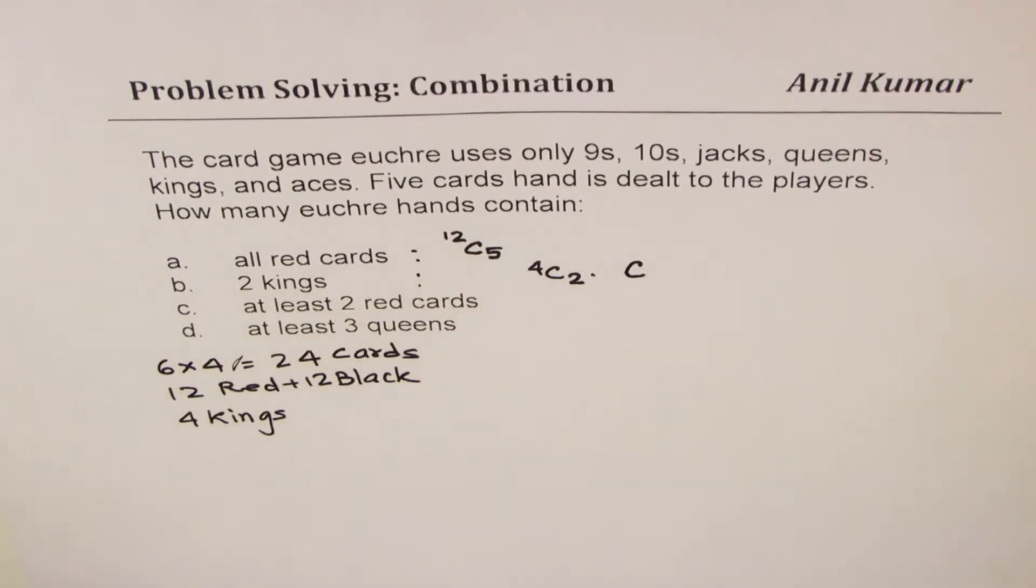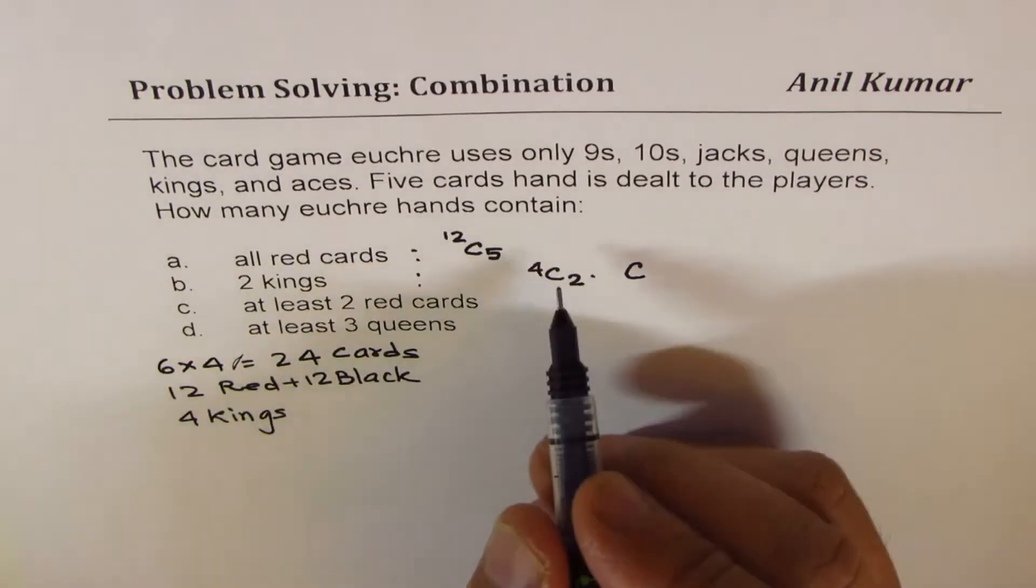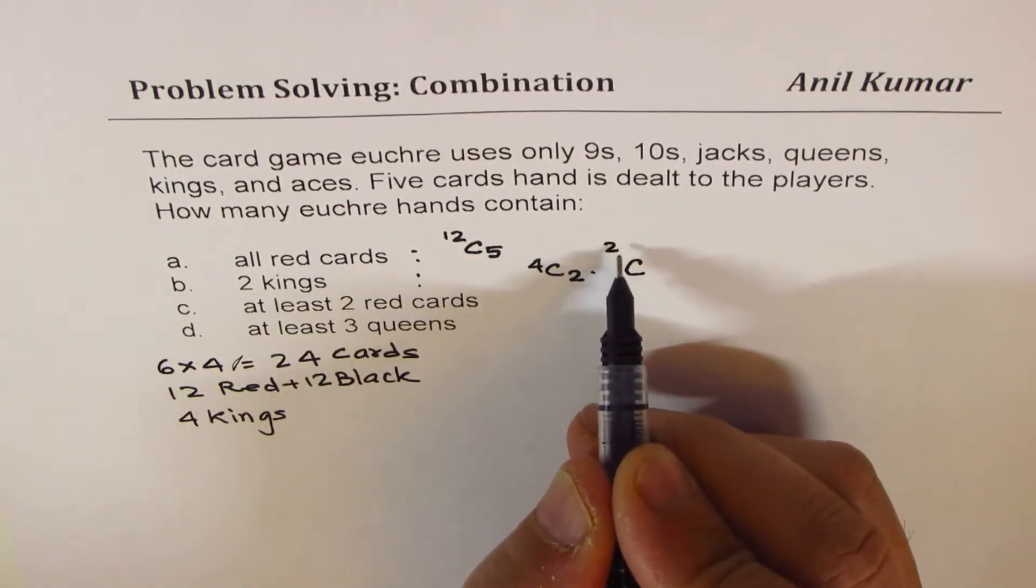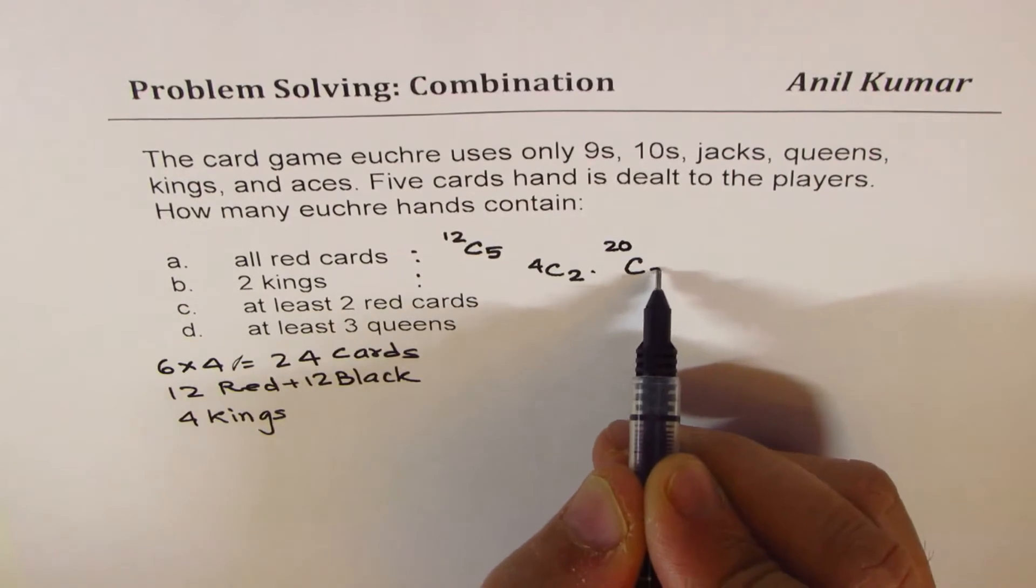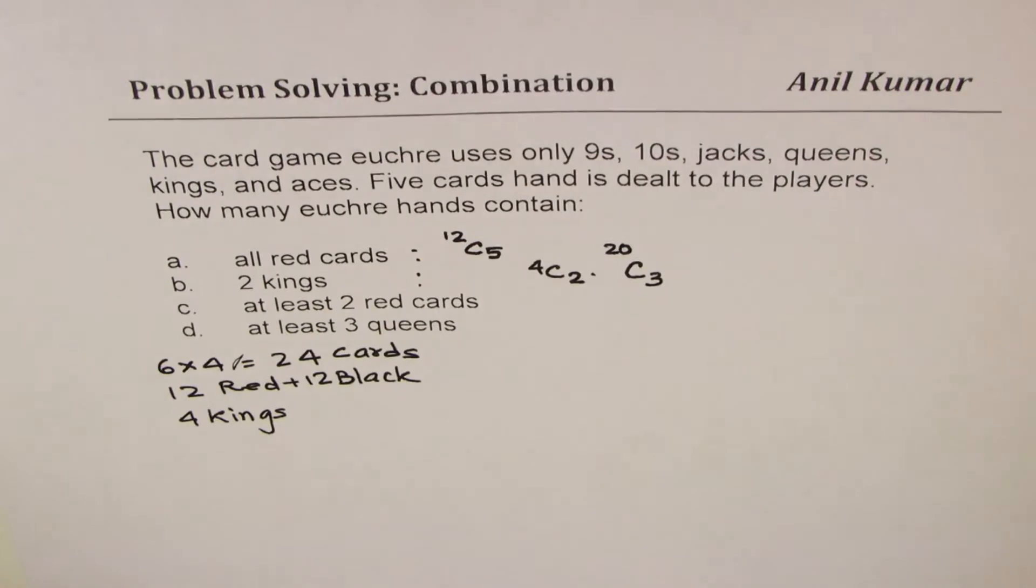So remaining, we have to get three cards from the remaining cards. Total is 24, four are kings. Apart from kings, there are 20 other cards, and we need three out of those 20. So that is two kings combination. Is that clear?